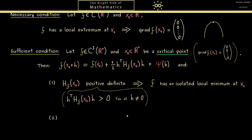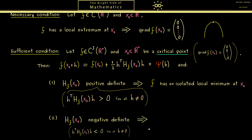We can also flip this condition to get a local maximum at x0. In other words, now the Hessian matrix should be negative definite, which is analogously defined — just with the less-than sign. This guarantees that we have an isolated local maximum at x0.